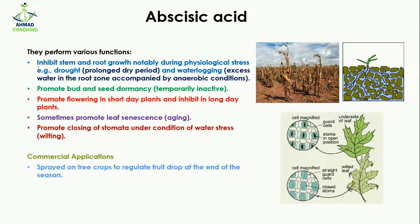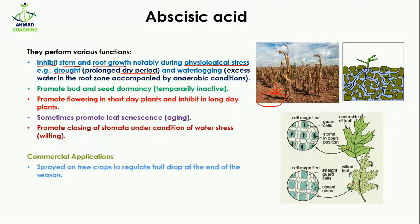First of all, abscisic acid is going to inhibit or stop the stem and root growth, notably during physiological stress. An example of physiological stress is drought — a period of prolonged dry conditions where the water level in the soil is very low and not suitable for plants. In this condition, abscisic acid stops root and stem growth.